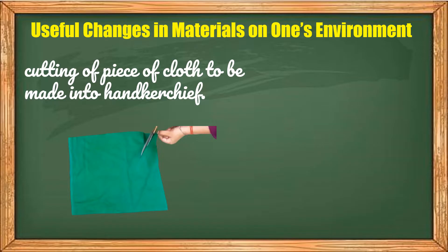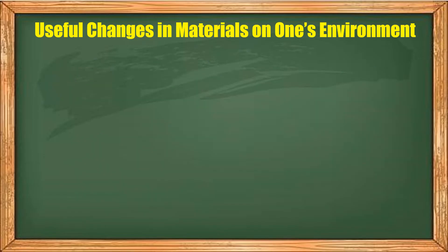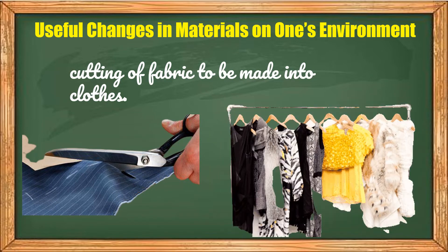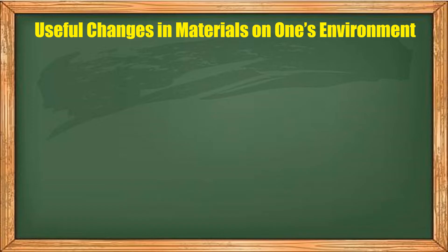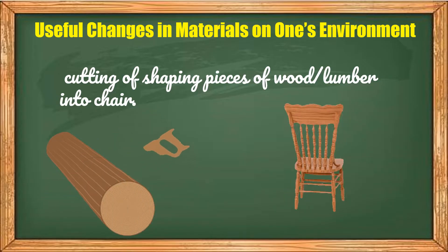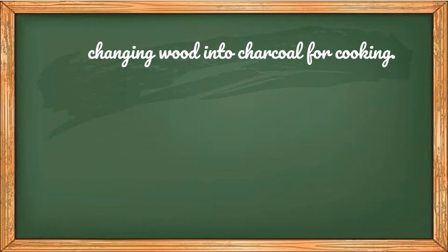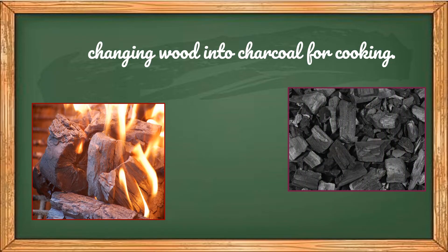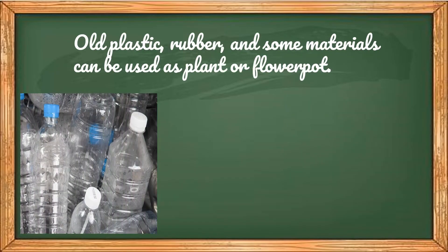Cutting a piece of cloth to be made into a handkerchief. Next, cutting of fabric to be made into clothes. Cutting and shaping pieces of wood lumber into a chair. And changing wood into charcoal for cooking. Also, old plastic, rubbers, and some materials can be used as plant or flower pots.